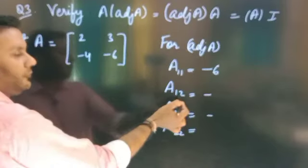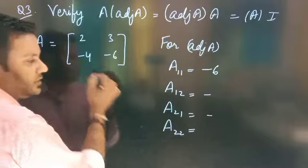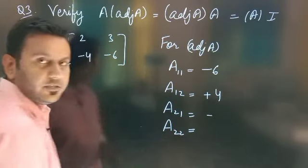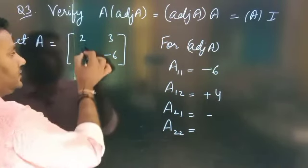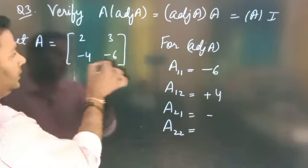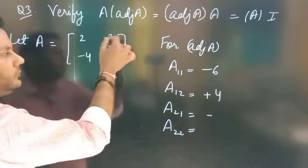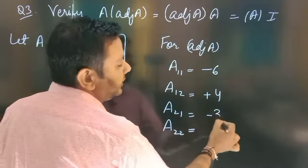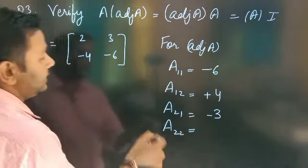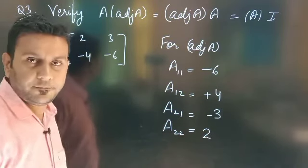Position 1,2 का co-factor: उस row और column को delete किया, minus 4 — minus minus क्या बन जाएगा? Plus 4। Third position 2,1 के corresponding row और column को delete किया, 3 remaining, so minus sign already exist कर रहा है, so minus 3। And last, A22 — 2 as it is आगया।